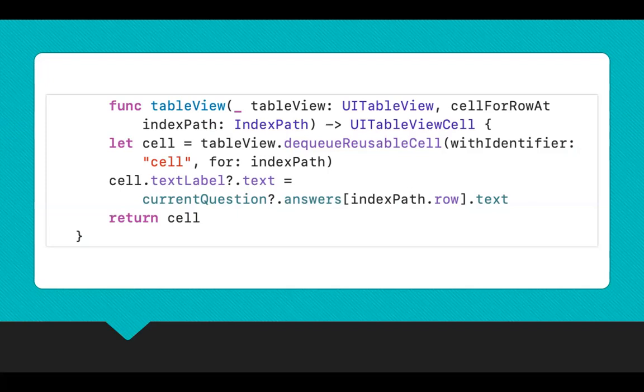which is the tableView, the UITableView, and then a return cell, which contains a reusable table view cell object for the specified reuse identifier, which is in the code with the dequeueReusableCell within the table view.